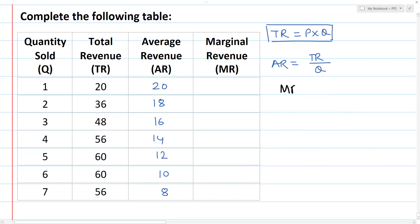Marginal revenue can also be expressed as: MR is equal to delta TR divided by delta Q. In the first unit, marginal revenue is equal to the total revenue for that unit.